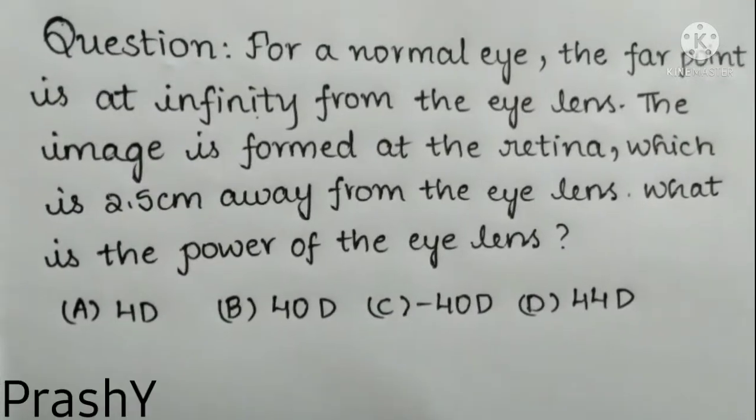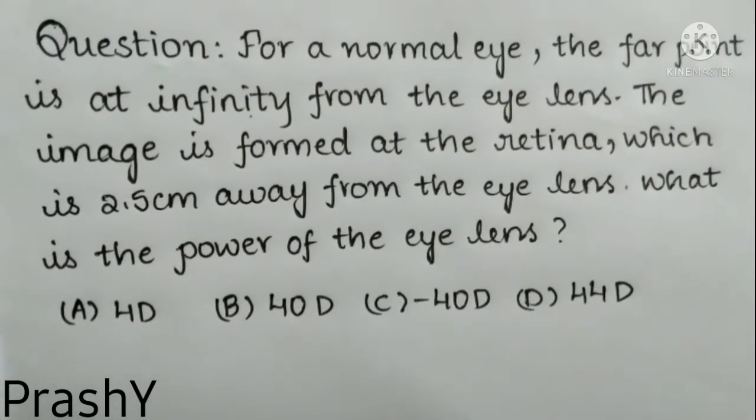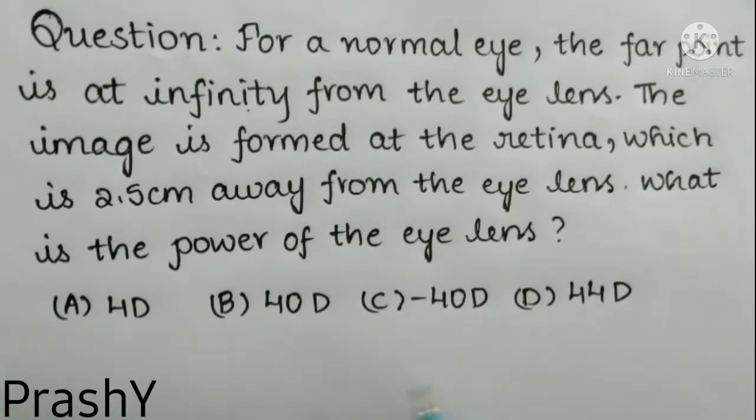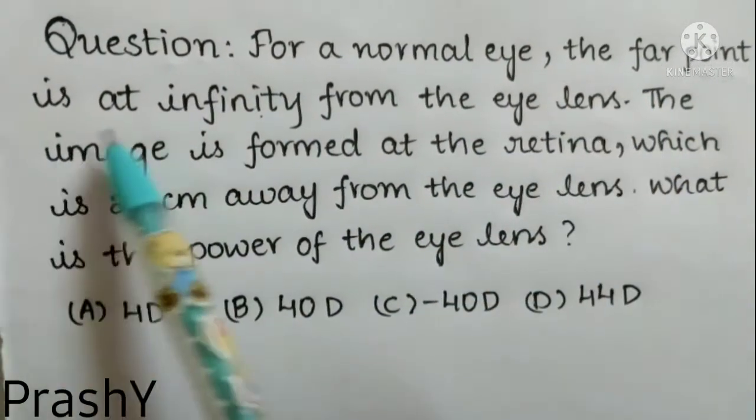Welcome back to our channel Prash Learning is Fun. In this module we are going to discuss some problems from physics under the topic human eye and colorful world. Let's see the question: for a normal eye, the far point is at infinity from the eye lens.